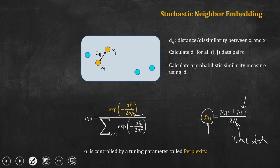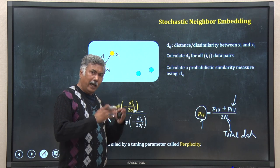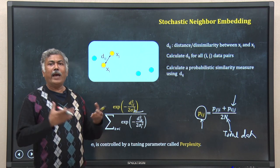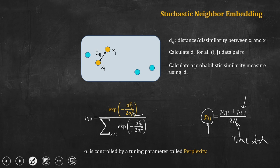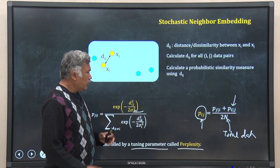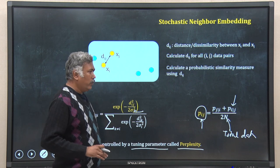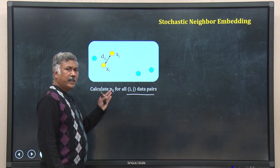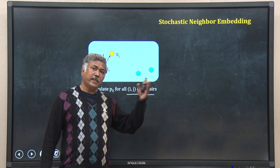While d_ij comes from the original dataset, how do we know sigma_i? Sigma_i is a parameter in the algorithm decided by a tuning parameter that you can set as a user, called perplexity. Once you set the value of perplexity, the sigma_i values will also be decided. In this way, I can calculate p_ij for all data pairs — in this example 10 pairs with 5 data points.